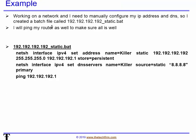To configure my IP address and DNS on a customer network — which happens all the time — instead of remembering the IP each visit, I create a simple batch file, for example '192.192.192.static.bat.' You can call it anything you want. The batch file contains the NetSH commands for IP address, mask, gateway, store persistent, and then DNS. At the end I also ping the router to confirm connectivity. All you have to do is run the batch file. When you get comfortable, create a shortcut folder named after the customer with all your static or DHCP settings. Click, click, done — no third-party utilities required.